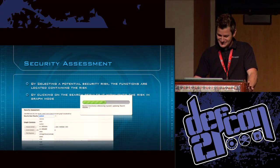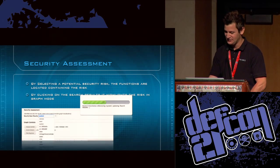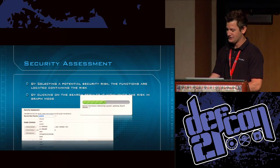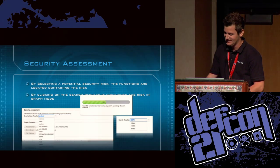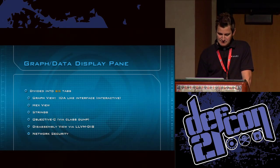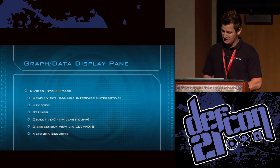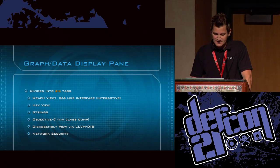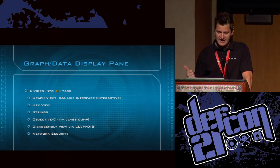We find three functions containing the reference 'system' and update the search results with them — you'll see three functions you can click on to navigate directly to those locations. The last part is the graph data display pane, which is divided into six tabs. The first is the graph view — an IDA-like interface that's completely interactive: you can zoom, scale, and highlight.